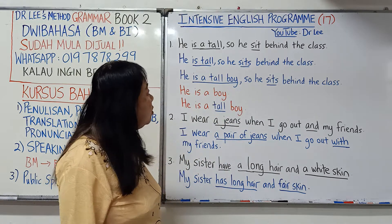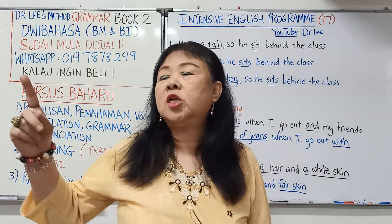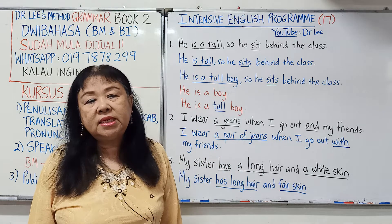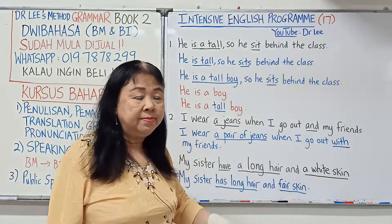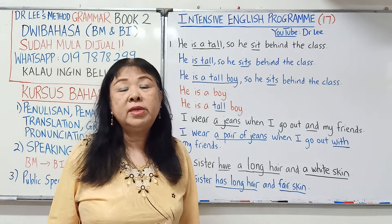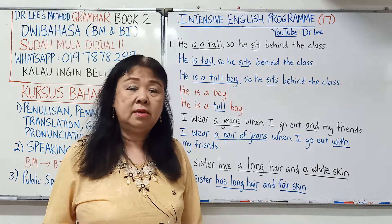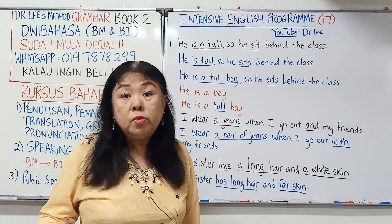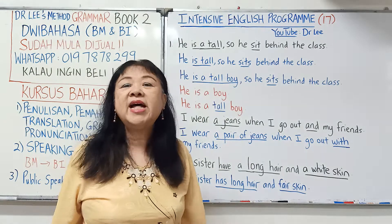Contoh kesalahan: 'He is a tall, so he is in behind the class.' Kerap sekali kita lihat. 'He is a tall,' 'he is a short' — ini tidak boleh. Sepatutnya, he is tall. Dia tinggi. Jangan gunakan 'a' dengan adjektif sahaja tanpa noun.